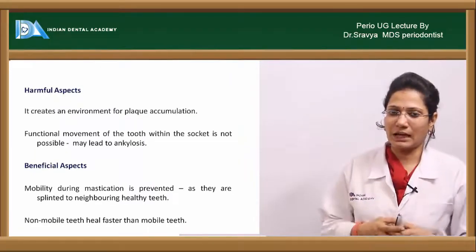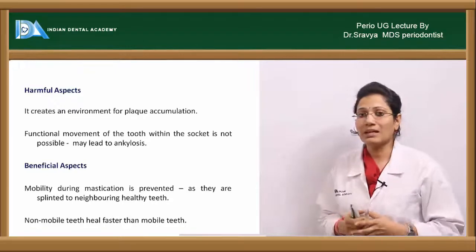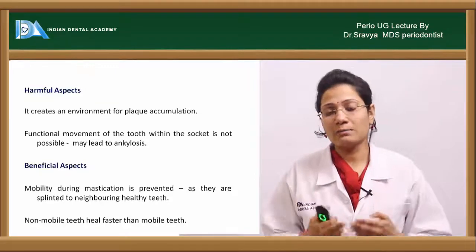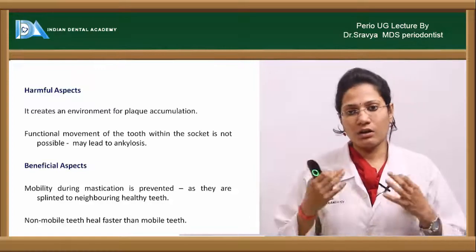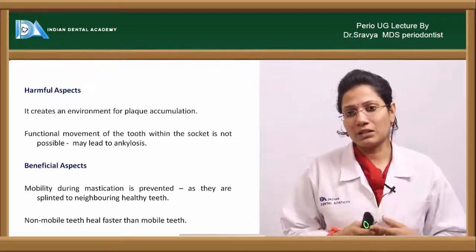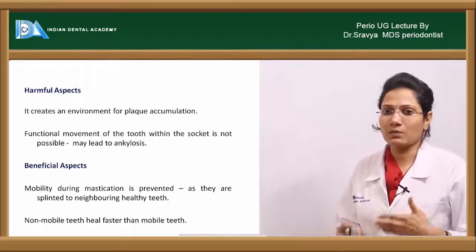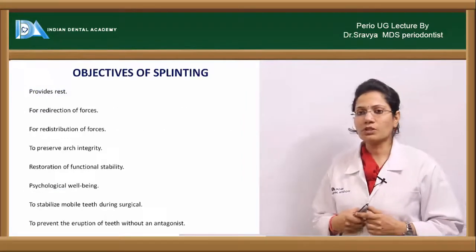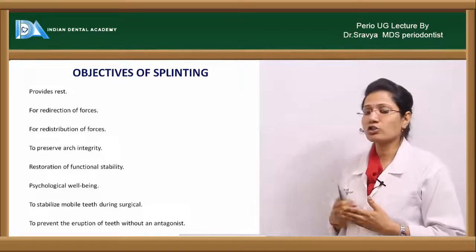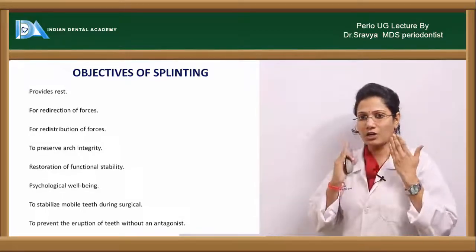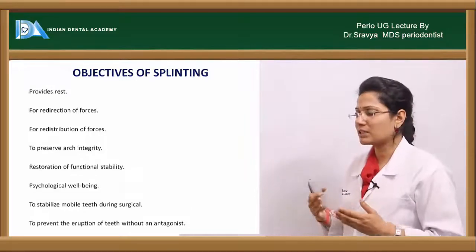The harmful effects of splints include accumulation of plaque and limiting functional movement of teeth, which can sometimes lead to ankylosis. The beneficial aspects include providing functioning and re-functioning of mobile teeth, and non-mobile teeth heal faster compared to mobile teeth. The objectives of splinting include providing adequate rest to teeth, redirecting and redistributing forces, preserving arch integrity, restoring functional stability and psychological well-being, and stabilizing mobile teeth during surgical procedures.